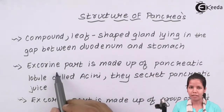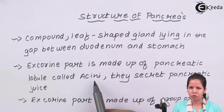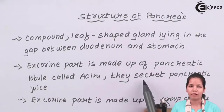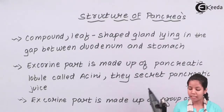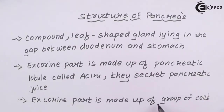The acini cells secrete the pancreatic juices — all the juices like amylase, antitrypsin, and all of them. Whereas the endocrine part is also made up of certain groups of cells.